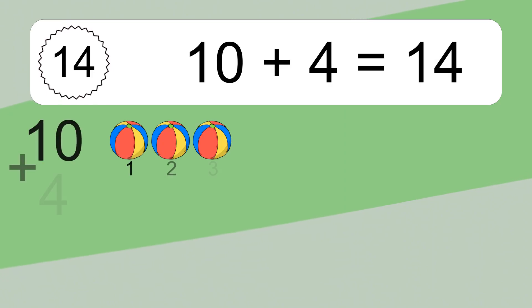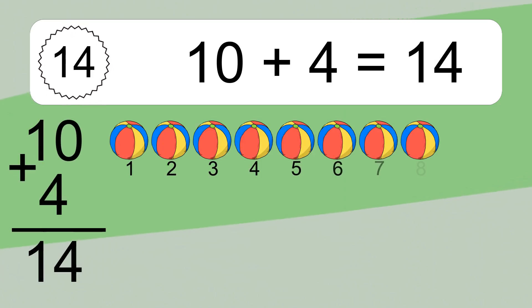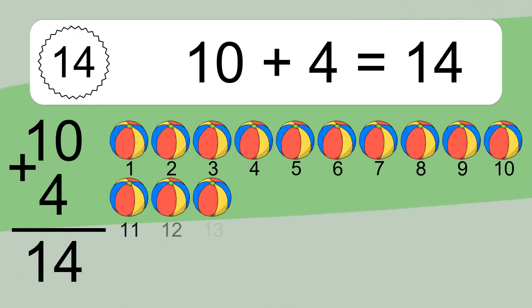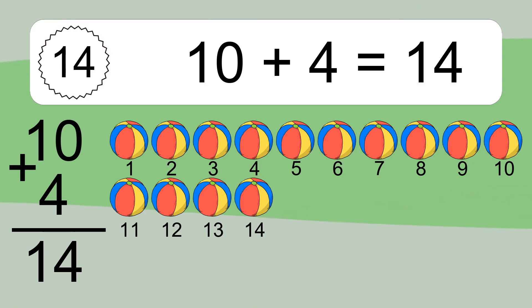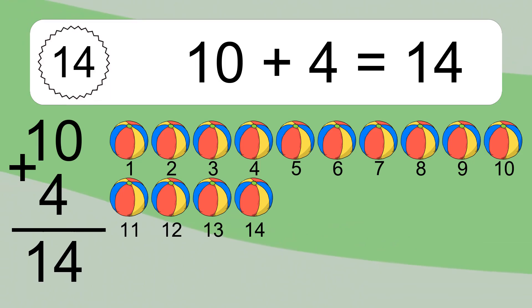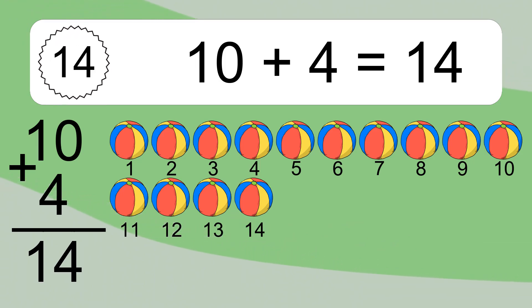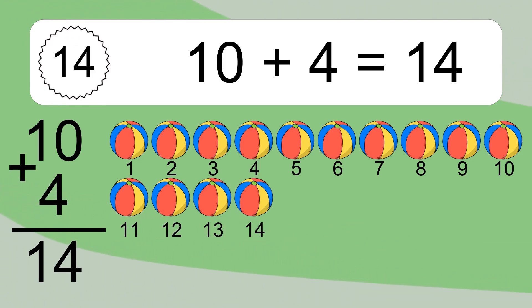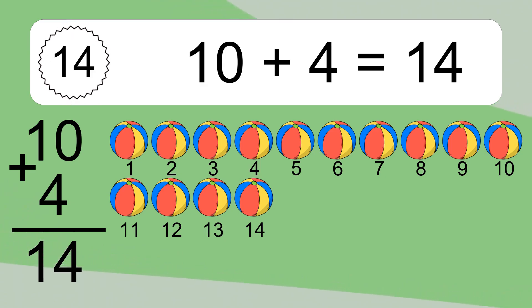10 plus 4 equals 14. Let's count it: 1, 2, 3, 4, 5, 6, 7, 8, 9, 10, 11, 12, 13, 14.